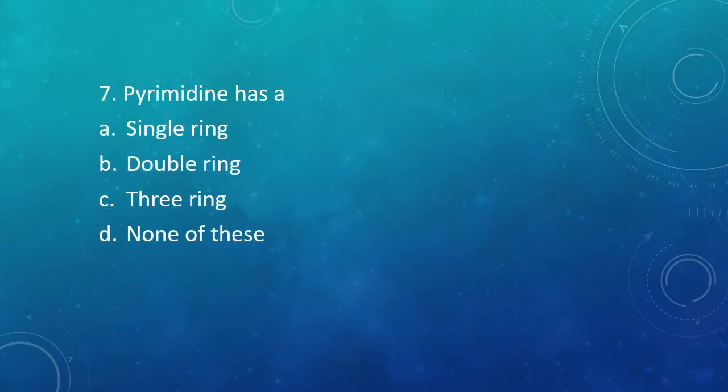Question 7: Pyrimidine has — the correct answer is Option A, that is it is made up of a single ring.